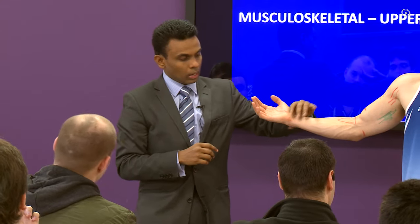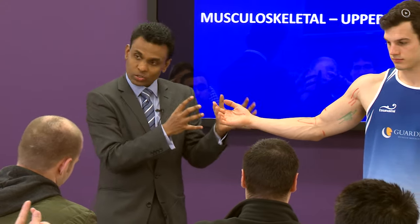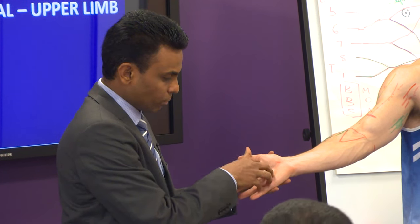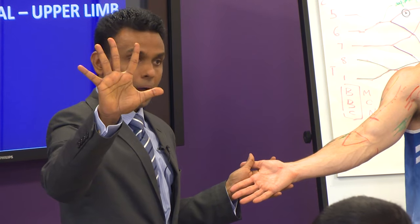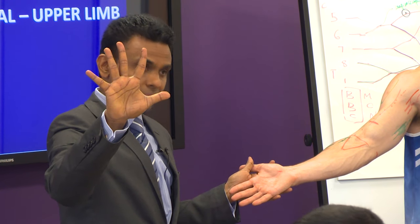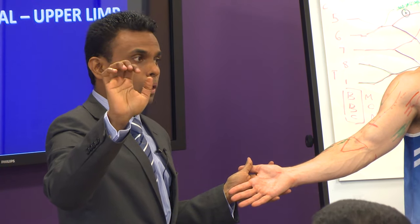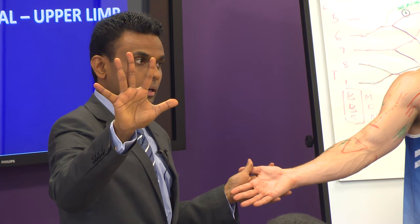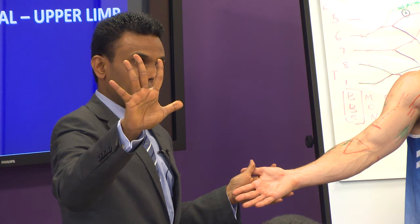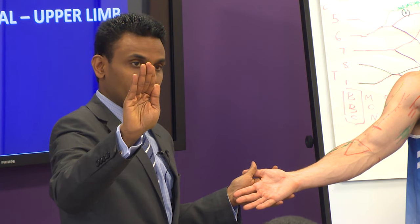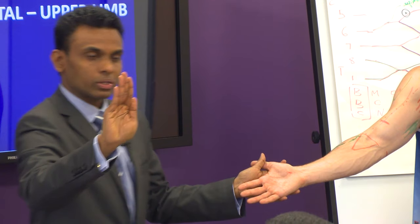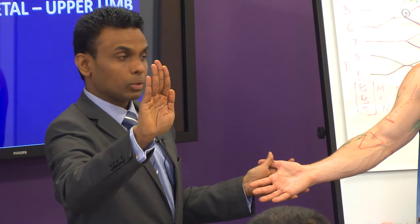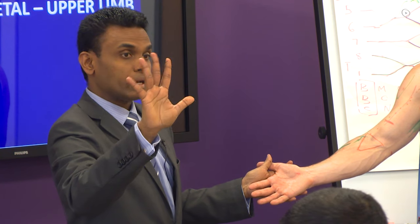To understand claw hand, you need to understand the action of the intrinsic muscles. Abduction of the fingers is by the dorsal interossei — DAB: dorsal interossei abduct. PAD: palmar interossei adduct. So there are four dorsal and four palmar interossei — eight muscles in total.